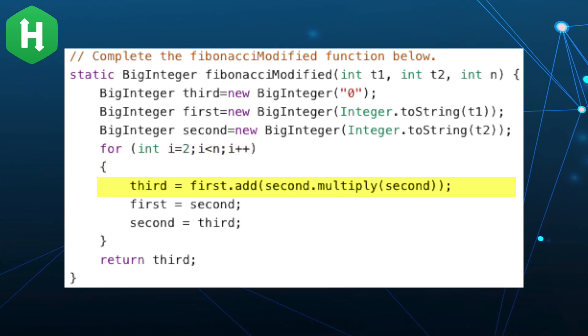Next, we calculate the square of the second term and add the result to our first term. The result is then reassigned to the BigInteger third.